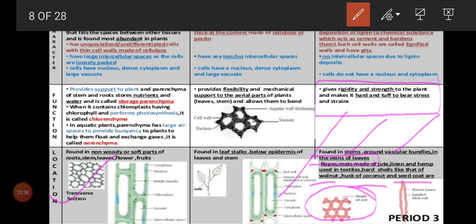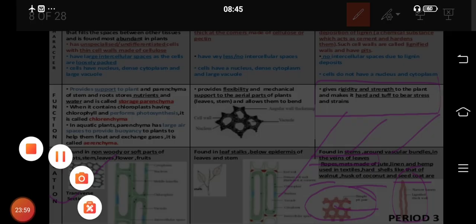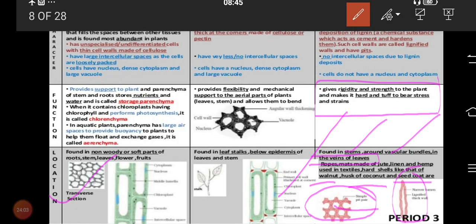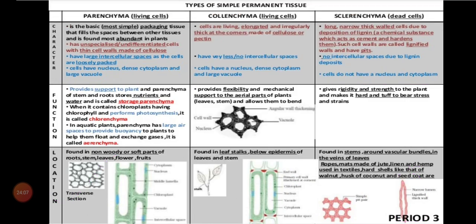This is the transverse section of sclerenchyma and this is the longitudinal section of sclerenchyma. The brown color is the cell wall — imagine how thick it is. We can see only the vacuole; there is no chlorophyll, no cytoplasm, nothing. It only gives rigidity and strength to the plant. In the next class, we will continue with the other complex permanent tissue. We have learned what permanent tissue is, the types of permanent tissue — simple permanent tissue and complex permanent tissue. Under simple: parenchyma, collenchyma, sclerenchyma. Which is dead? Only sclerenchyma is dead; collenchyma and parenchyma are living. We have learned the characteristics, function, and location. Next class we will move on to complex permanent tissue. Thank you children.